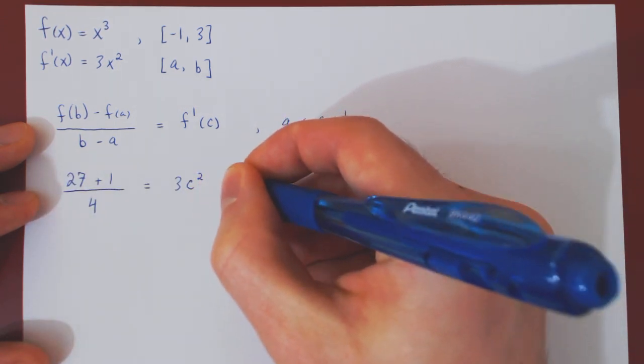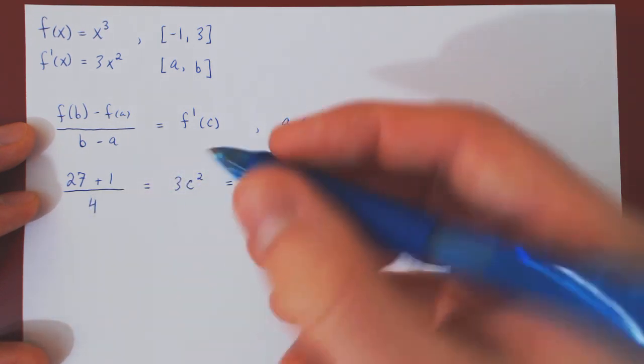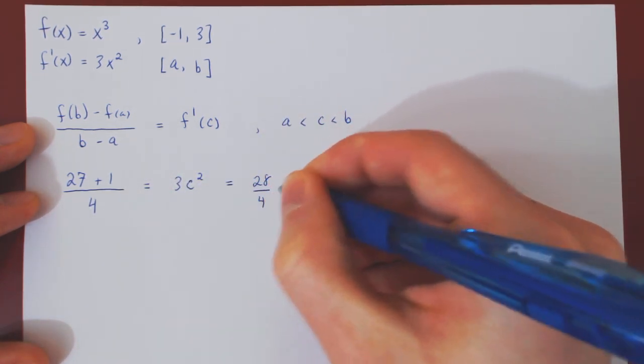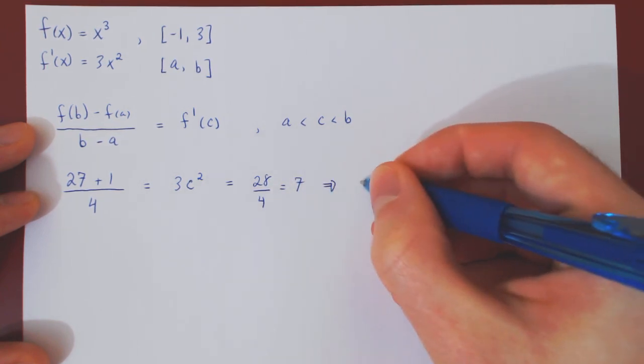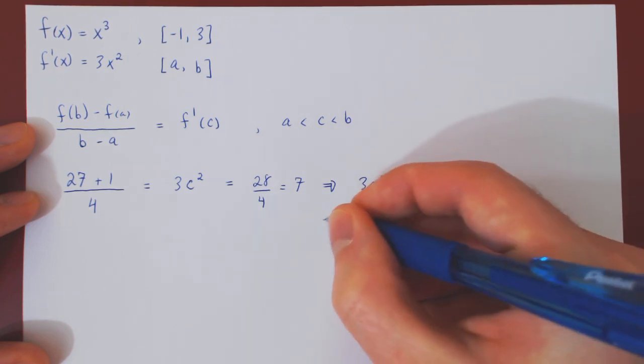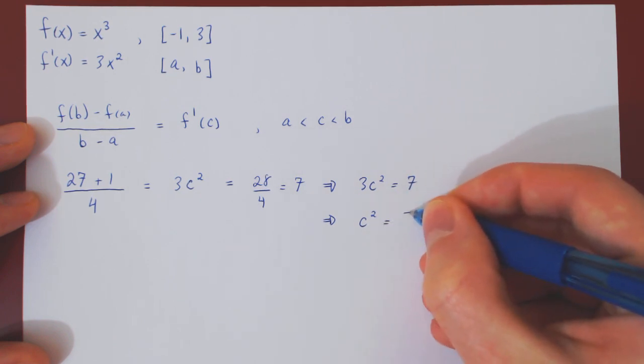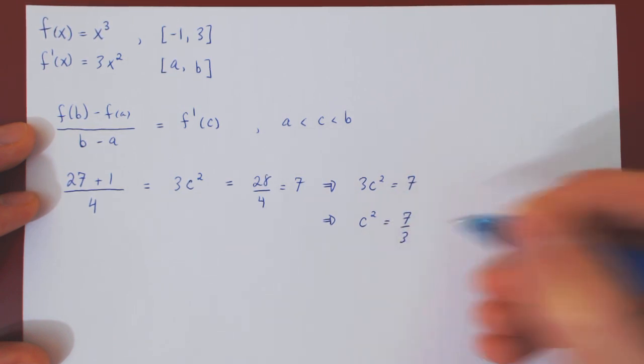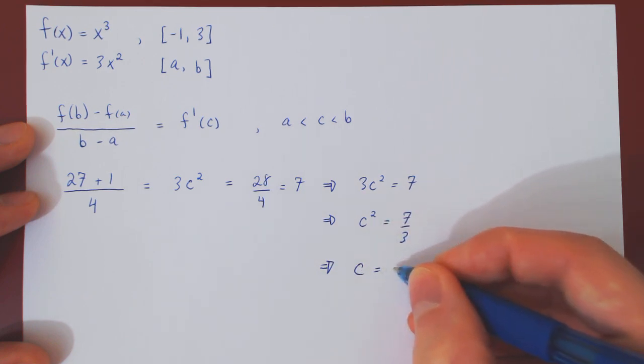We can simplify, of course, the left-hand side, so 28 over 4 is equal to 7. So what we now have is that 3c squared must equal 7, divide by 3, so c squared is equal to 7 over 3, therefore, c will be plus or minus the square root of 7 over 3.